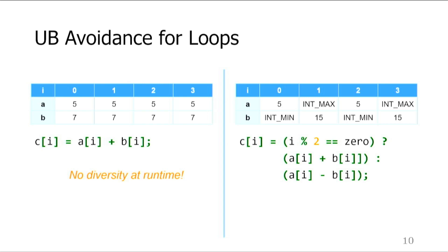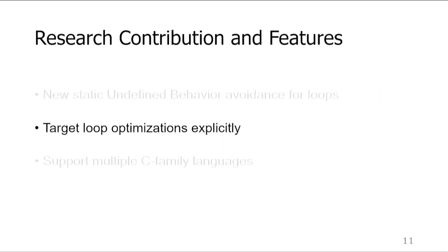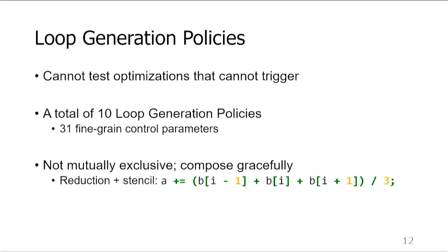Overall, YarpGen generates tests that are guaranteed to comply with the language standard. Our second research contribution is a mechanism that allows us to target loop optimizations explicitly. This way, we can ensure that optimizations that we are interested in fire often enough. It is necessary because we cannot test optimizations that we cannot trigger. We refer to the collection of the techniques that allow us to do that as generation policies. In total, we developed 10 loop-specific generation policies with a total of 31 fine-grained control parameters for them. They are not mutually exclusive and can compose gracefully. Overall, the goal of the generation policies is to produce code that is likely to satisfy optimization prerequisites and trigger them. And now, it's time to look closely at three loop-specific generation policies.